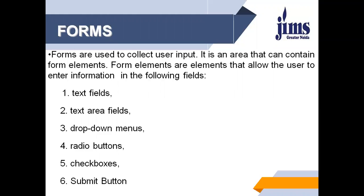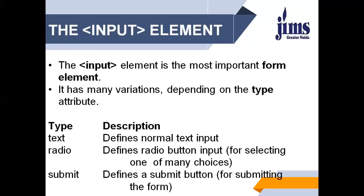We have form elements, which are also called container elements — all the elements required to define the contents of a form. There are parameters of these elements known as attributes. The first element we are going to discuss is the input element. Input element represents a field that has content that may be edited by the user. It is the most important form element and has many variations depending on the type attribute. Type may be text, radio, submit, checkbox, reset, textarea, password, and so on.